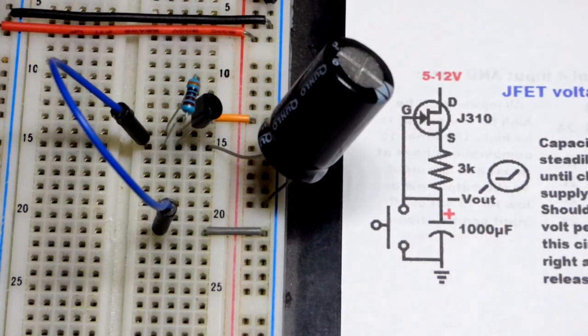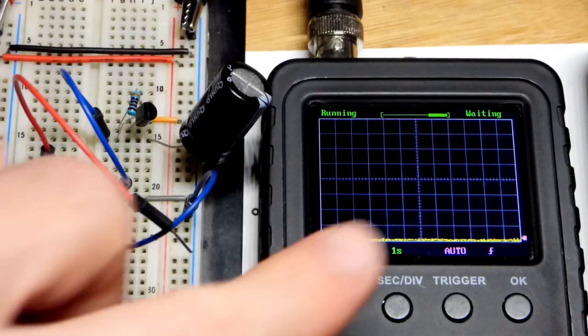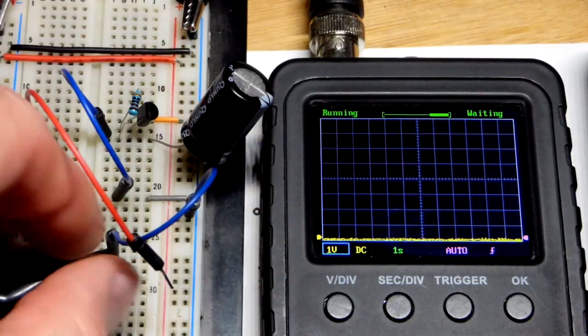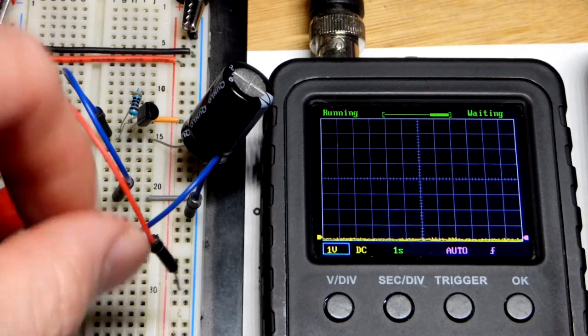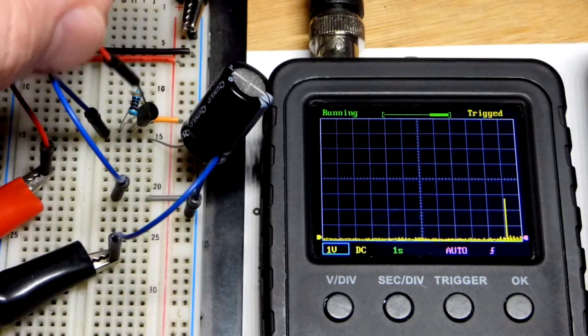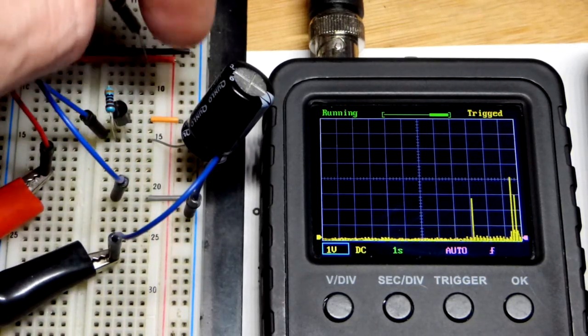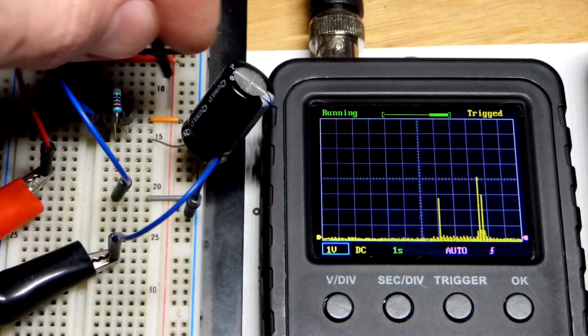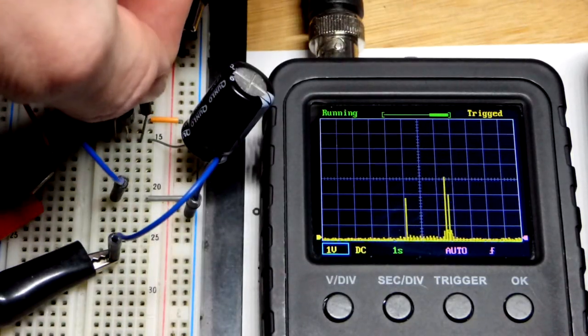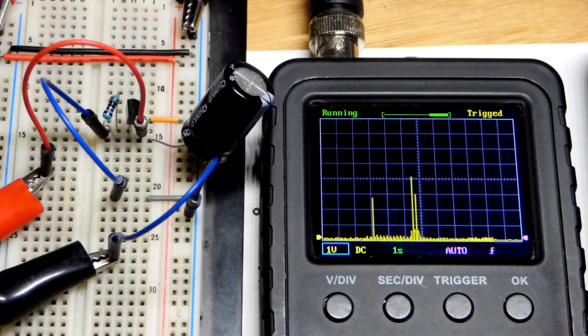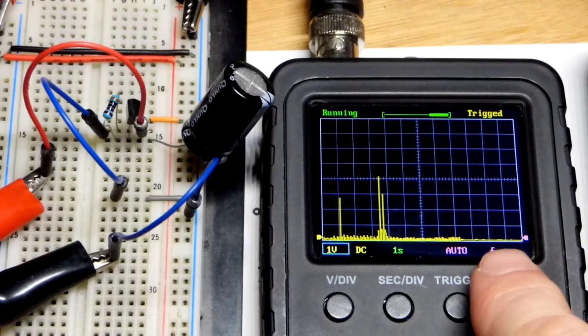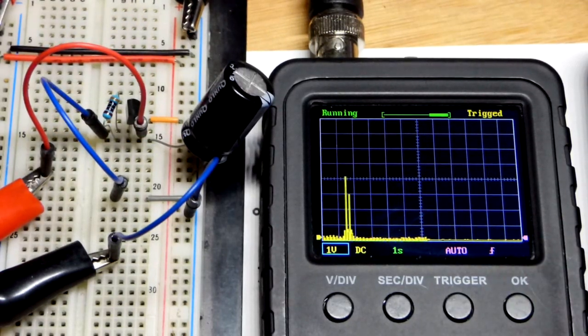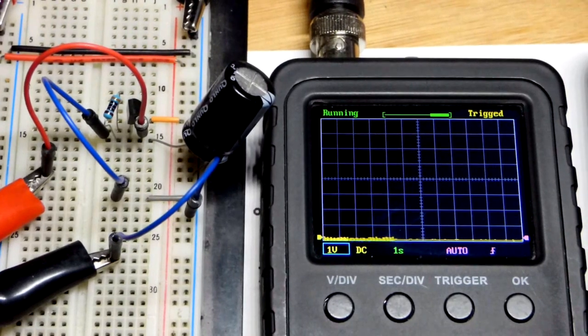1000 microfarad capacitor. And now we grab my little oscilloscope there, the cheaper one. So we got our ground clipped to ground. And then this is the voltage in relationship to ground. We're getting stray signals because it's floating here. We're going to plug it into the capacitor right there. So we got a solid 0 volts right there. Maybe a little noise, but in any case, we got 0 volts.